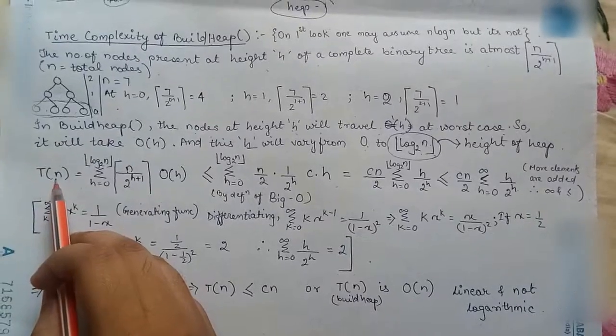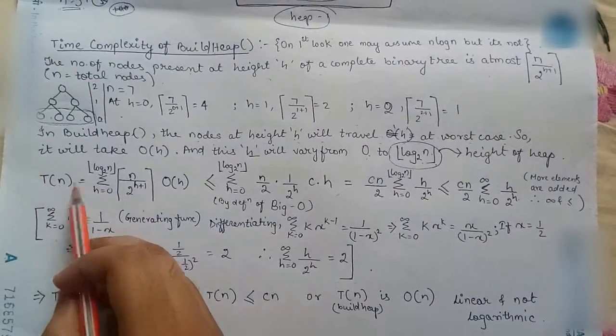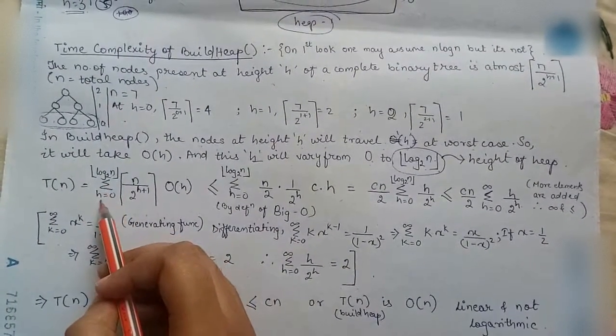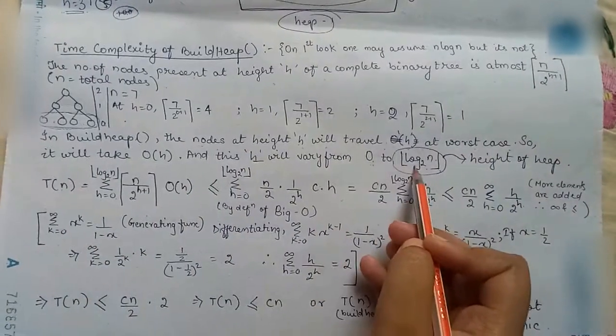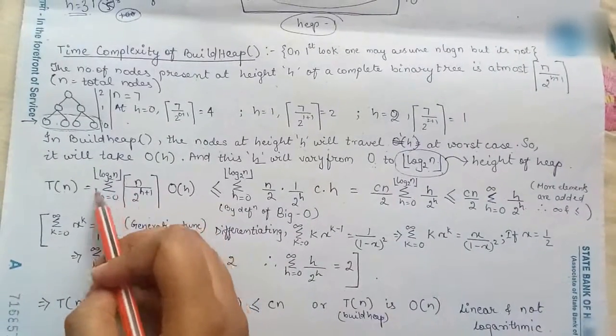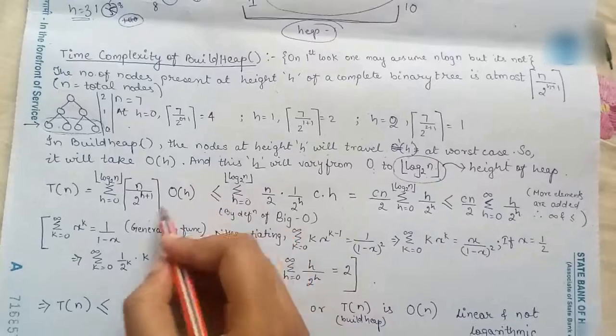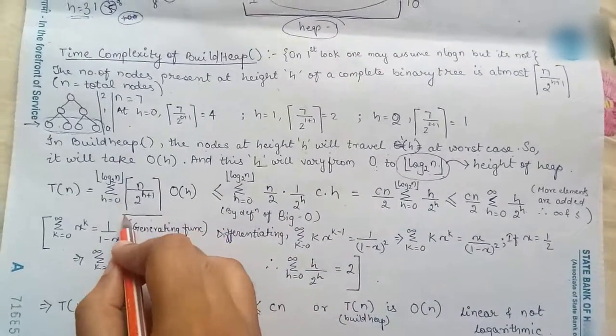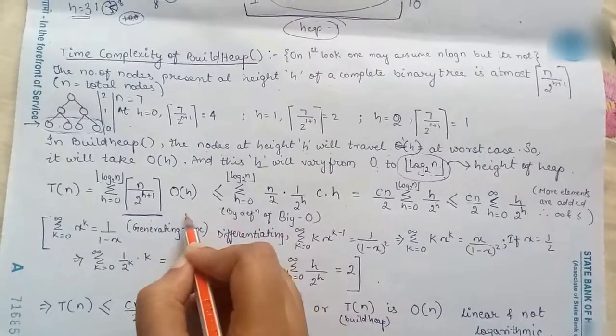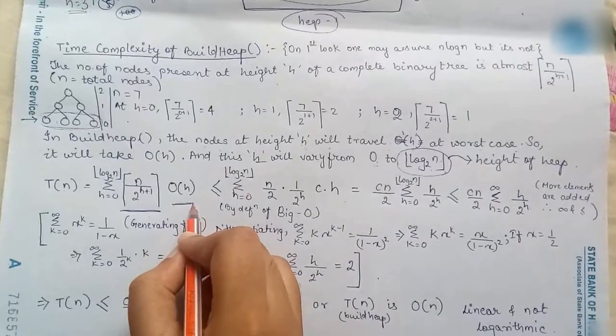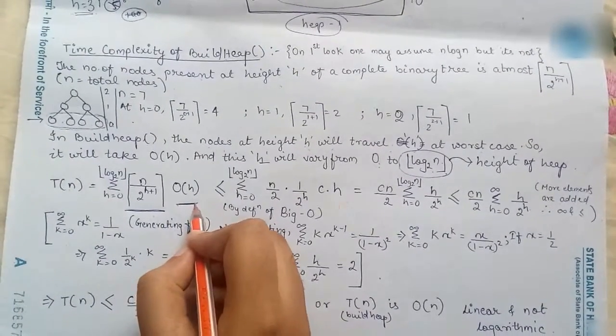So the time complexity of the build heap is summation of h equal to from 0 to log n base 2 floor. So that thing is written here and number of nodes multiplied with the distance they are traveling or the time complexity they have.